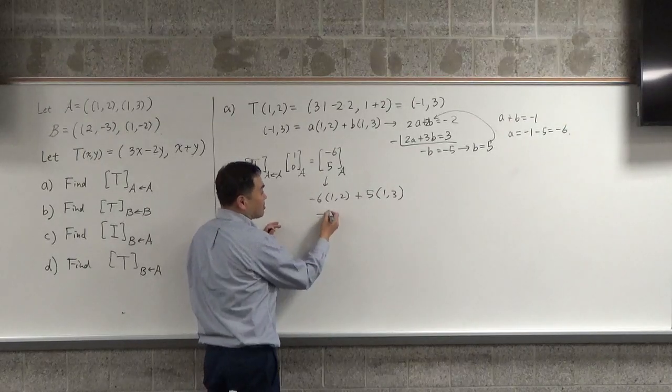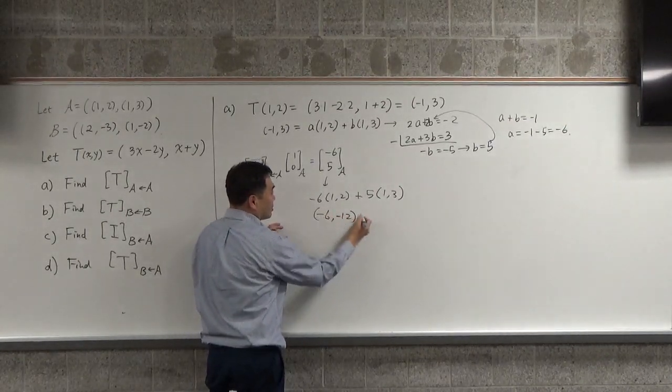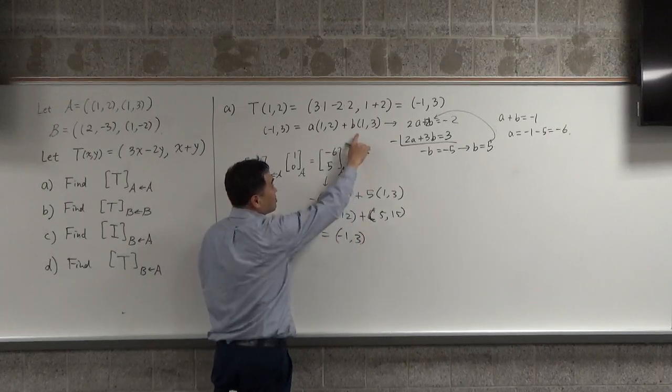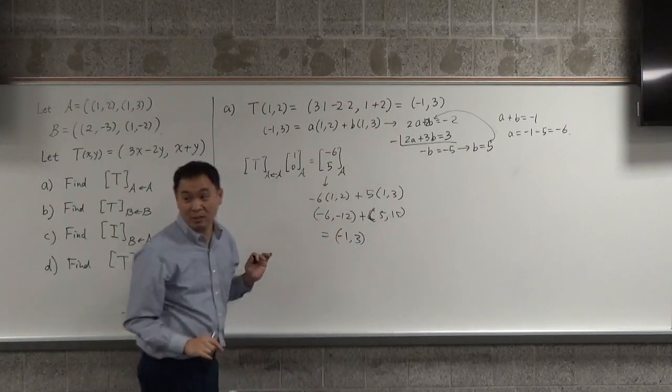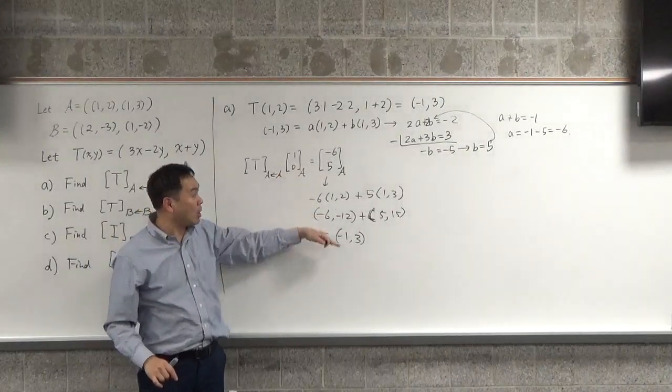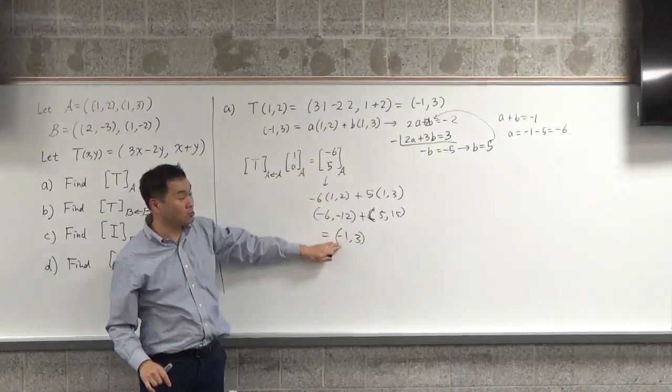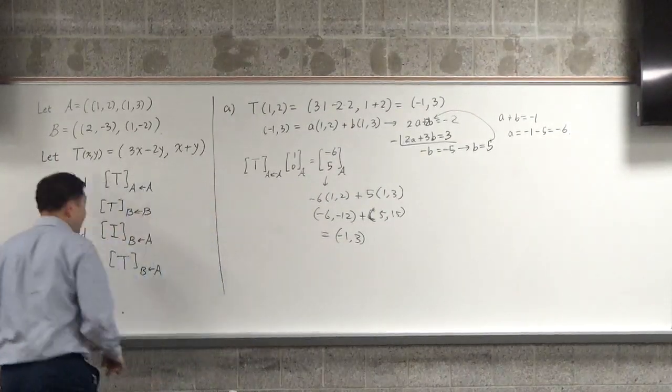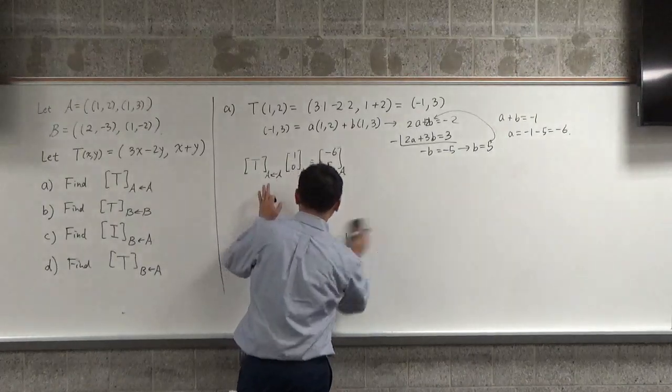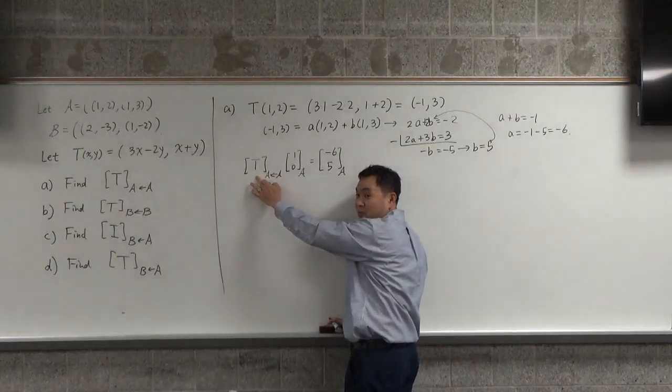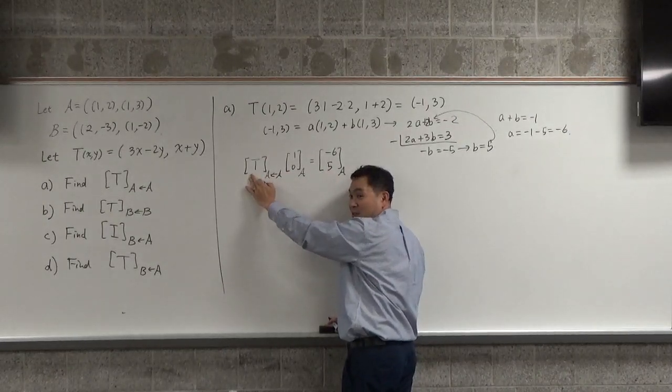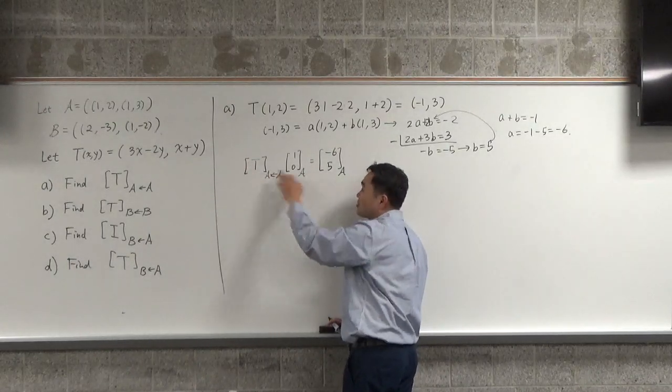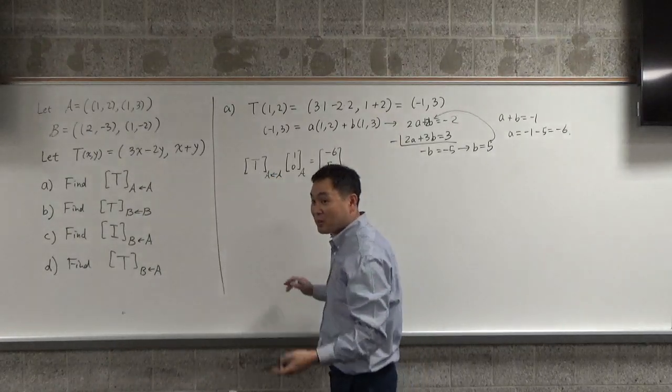So here's what we just figured out. If I have T as a matrix from A to A, then when you multiply (1,0)_A, because (1,0)_A means this very first element (1,2), right? This is the same thing as applying T to (1,2). And then if you apply T to (1,2), we found out that the resulting vector is negative 6 comma 5. What about this one? What does this tell you? It's the first column of this matrix. We found the first column.